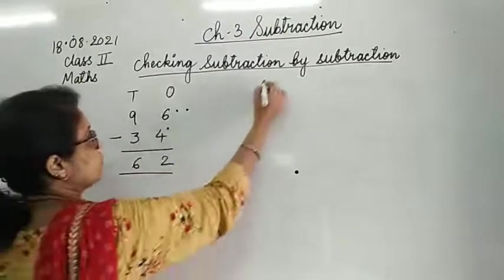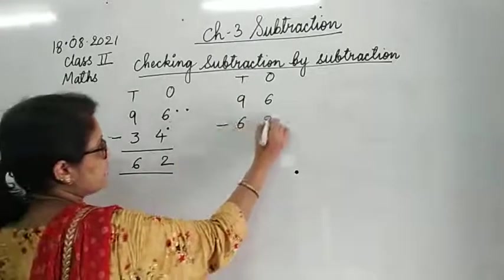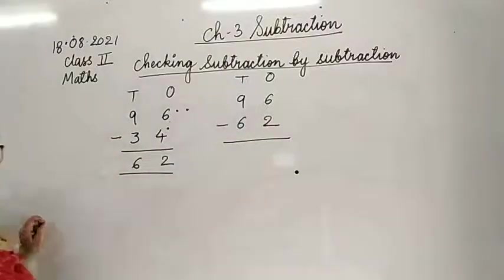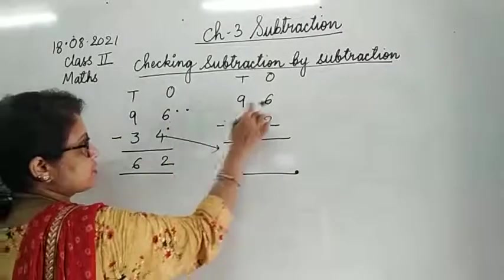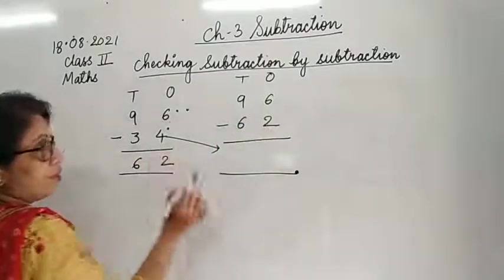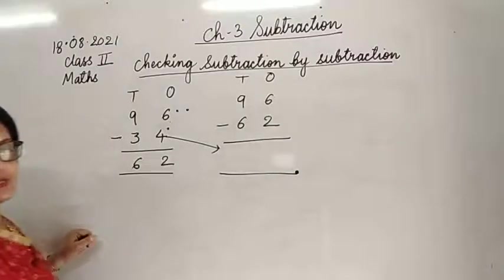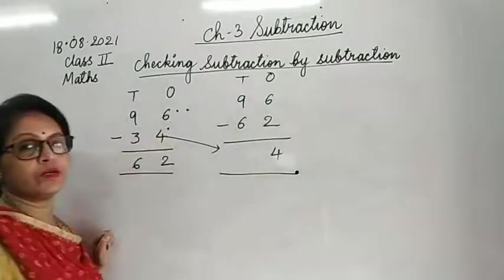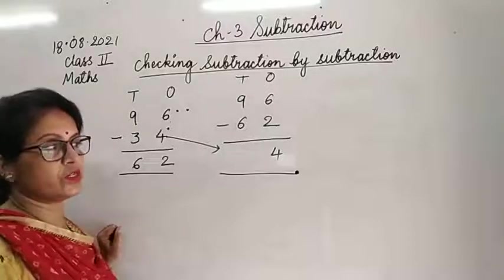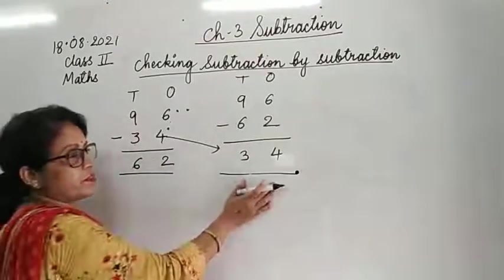Now for the check: 96 stays on top. The answer we got, 62, we write it here and subtract it. We should get back what we originally subtracted, which is 34. So 6 minus 2 is 4, and 9 minus 6 - take away 6, count 7, 8, 9 - that is 3. Answer is 34, same 34. This means our subtraction is correct.